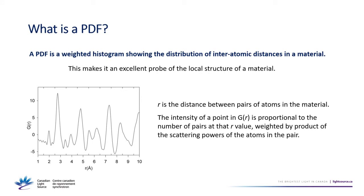A PDF is a distribution of interatomic distances in a material. On the x-axis you have r, the separation between atoms in angstroms. The function G(r) has intensity proportional to how many atoms you have separated at that distance, weighted by the scattering power of those atoms — atom one times atom two — showing how far apart the atoms are separated in your material.